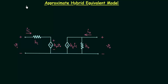We have already obtained the hybrid equivalent model of the transistor, and in this presentation we will perform a few simplifications. The simplified hybrid equivalent model we will call the approximate hybrid equivalent model. So in this presentation we are going to obtain the approximate hybrid equivalent model.